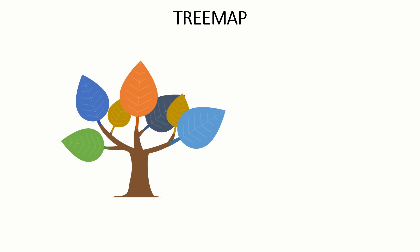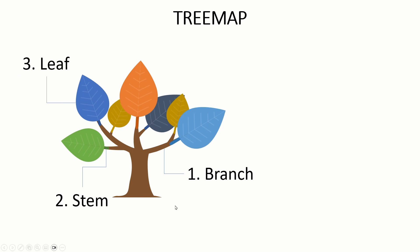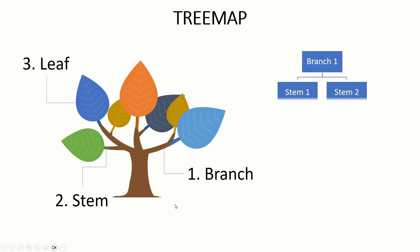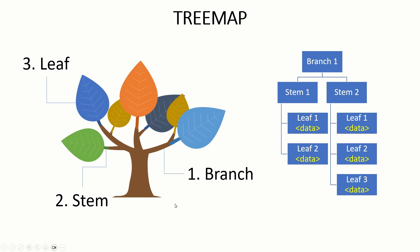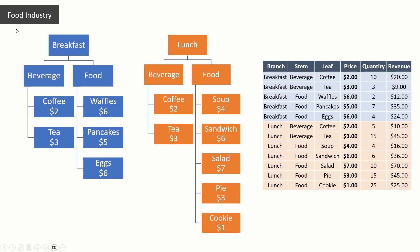To understand a tree map, let's look at this visual. In a typical tree we have a branch, then we have a stem — the stem of the leaf, not the overall stem — and then finally we have a leaf. Whenever you have hierarchical data with branches at the top, stems below, and leaves with specific data, a tree map is an ideal candidate.